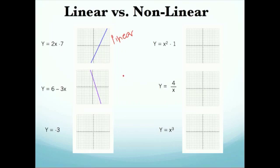Our second equation here is y equals 6 minus 3x. Again, we get a line like this, it's going up to the left, and again, it is linear.